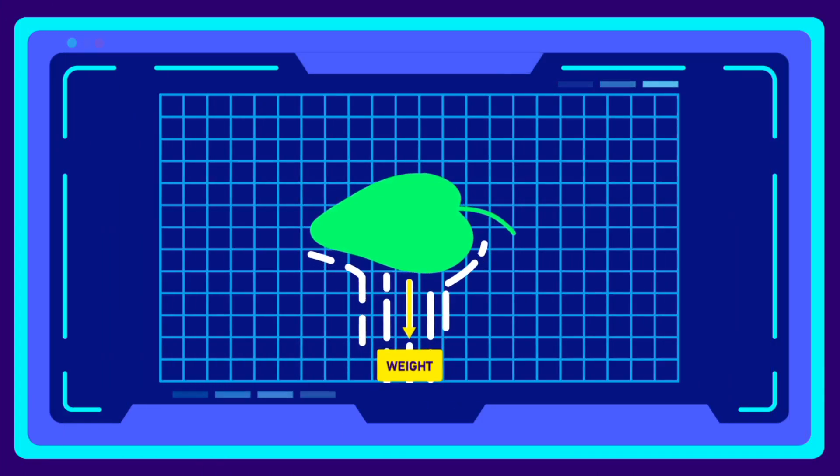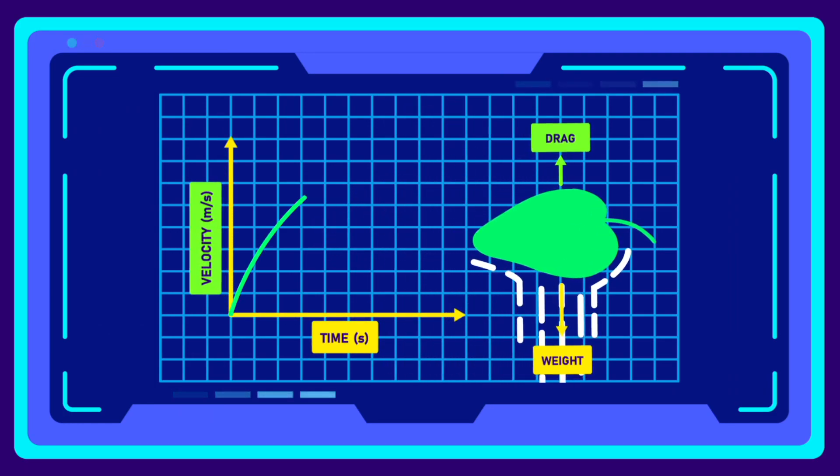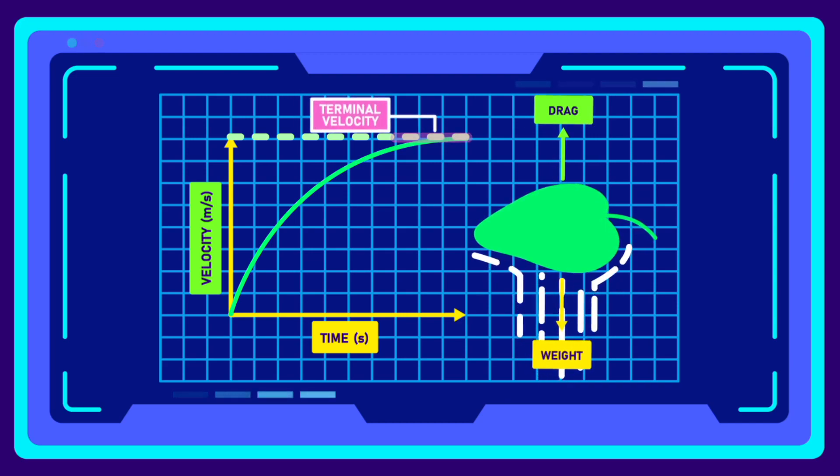When the acceleration due to gravity and the deceleration due to air resistance reach an impasse, the object will move at a constant velocity called the terminal velocity.